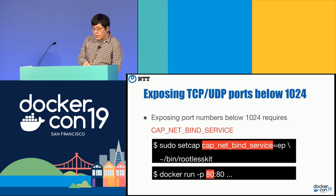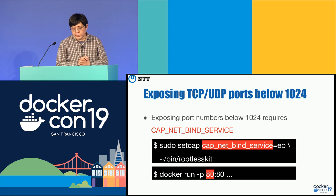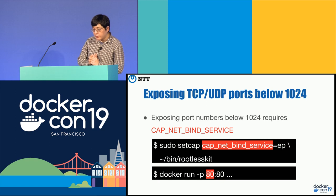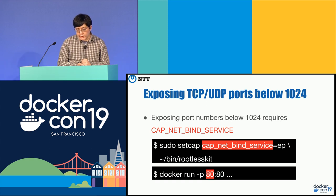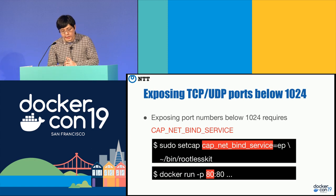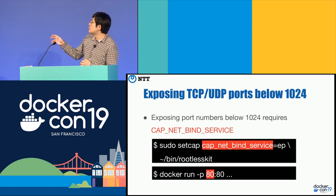For listening on TCP or UDP ports below 1024, such as port 80, you need to gain the cap_net_bind_service capability. To gain this capability you need to use the setcap command with sudo: sudo setcap to add this capability to the helper binary called rootlesskit. After doing that, you can run docker run -p 80 to directly map port 80 of the container to port 80 on the host.